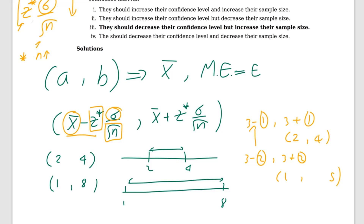Similarly, think about this: which gives a bigger interval — 95% or 99% confidence? The answer is 99%. A higher confidence level requires a wider interval. Think of it this way: if I need to be 99% sure rather than 95% sure, I need a wider net. So higher confidence level means a wider interval, and you can verify this by checking the z-table values.